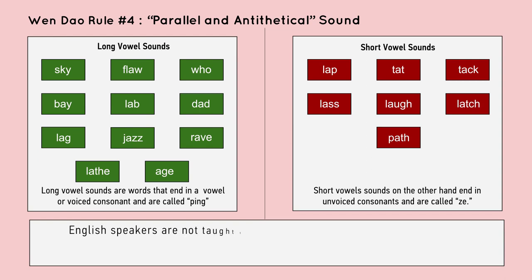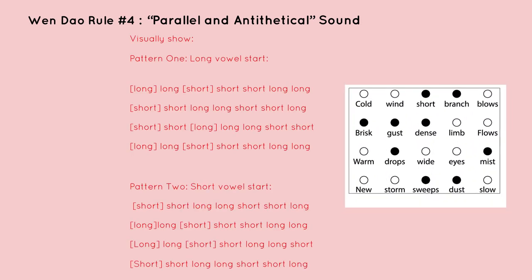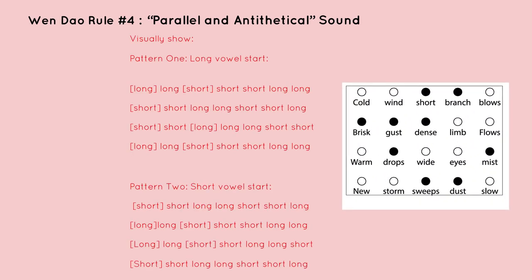English speakers are not taught this distinction because native speakers do not need to know the rule to produce the sound correctly. But writing English Jueju at this level requires one to hear it. Once you learn how to distinguish these vowel lengths, you are ready to restore harmony by following the same patterns as classical Chinese poets.